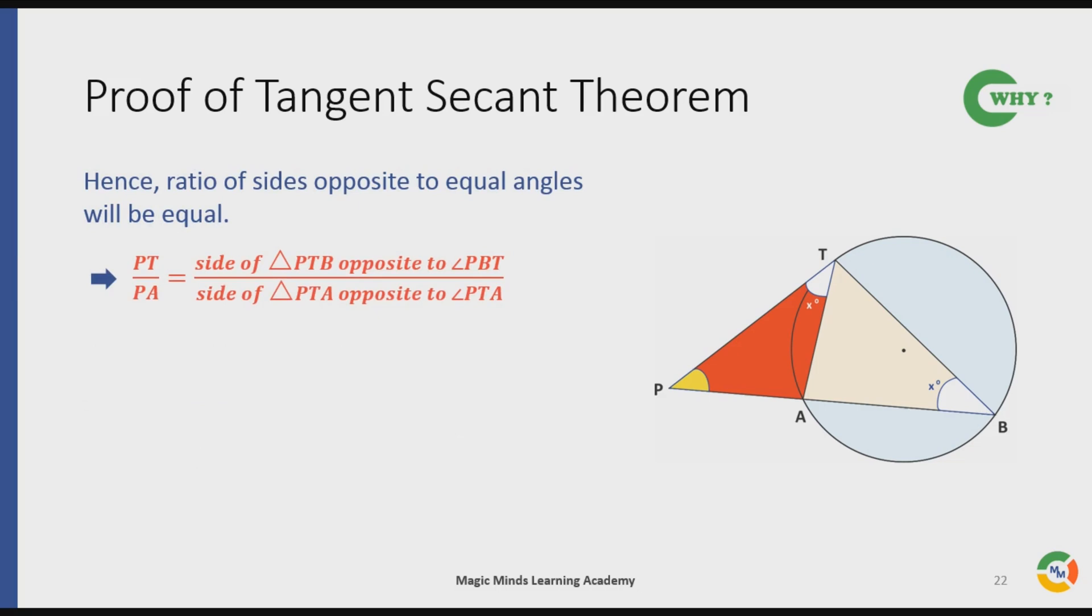That is, PT/PA represents the side of triangle PTB opposite to angle PTB divided by the side of triangle PTA opposite to angle PTA, which equals PB/PT, maintaining the proper ratio between the sides of these similar triangles.